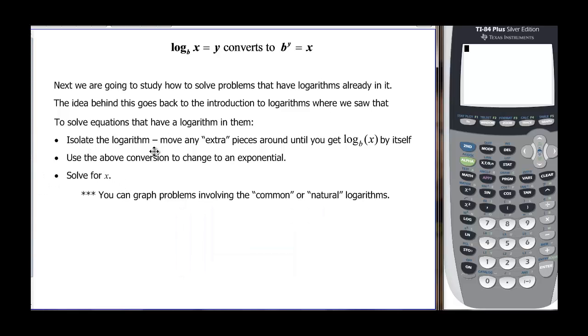So to do that, we need to isolate the logarithm, just like we were isolating the base. And then move the other pieces away so that we get the log with the base by itself. And then we convert it and change it to an exponential. And when we're converting, remember how we hopped across the pond when we were converting exponentials into logs? We did the same thing here.